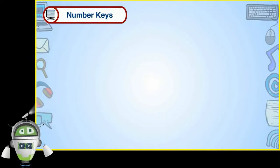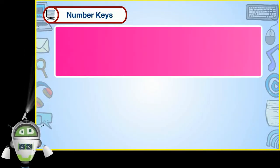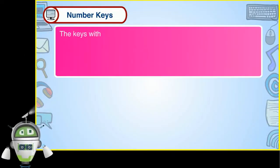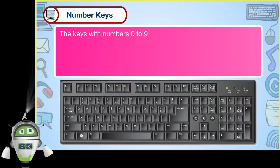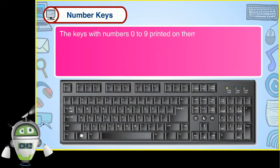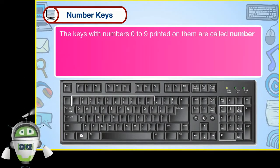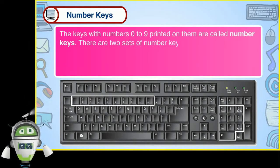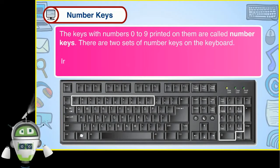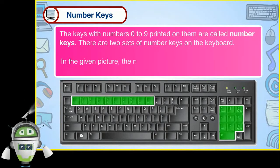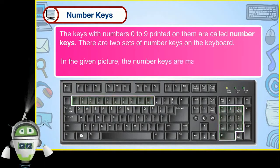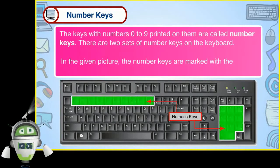Number keys. The keys with numbers 0 to 9 printed on them are called number keys. There are two sets of number keys on the keyboard. In the given picture, the number keys are marked with the green color.